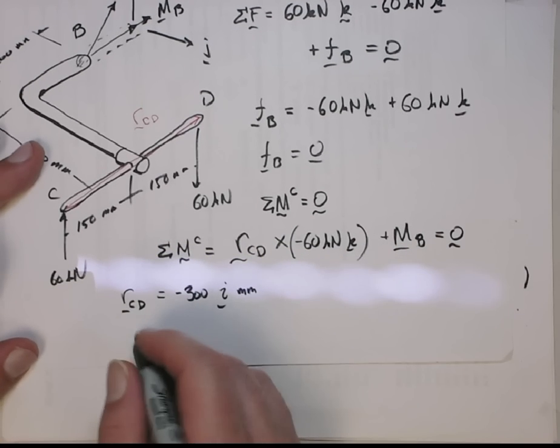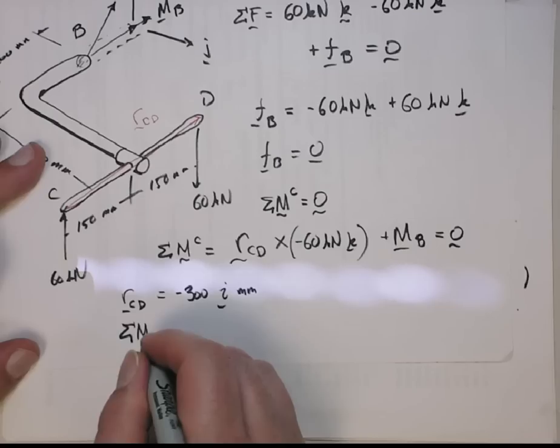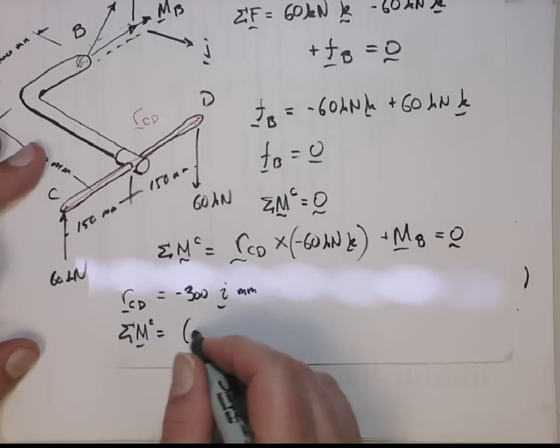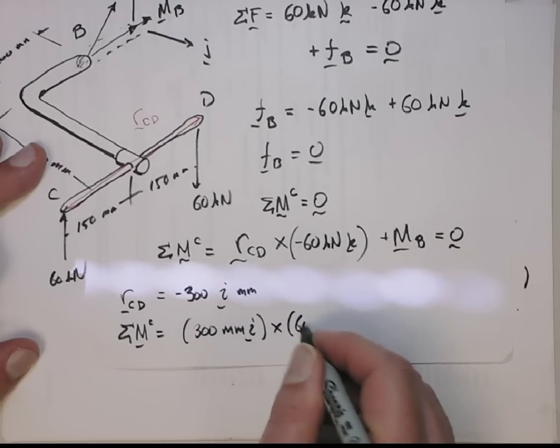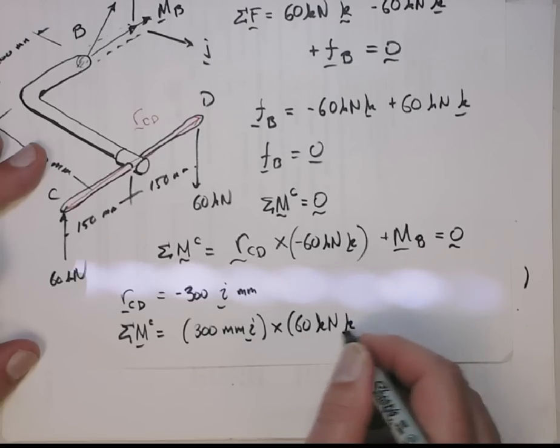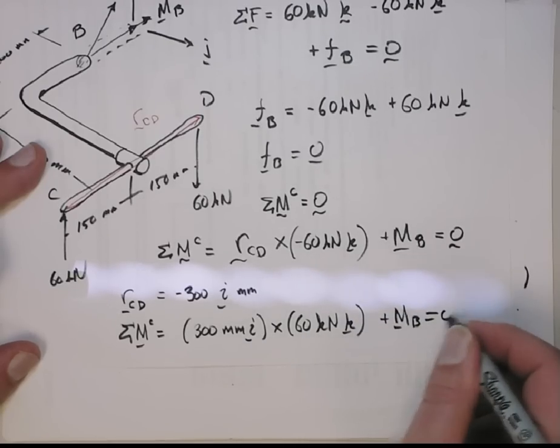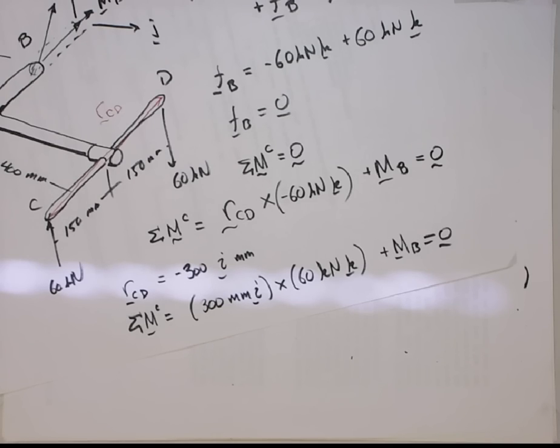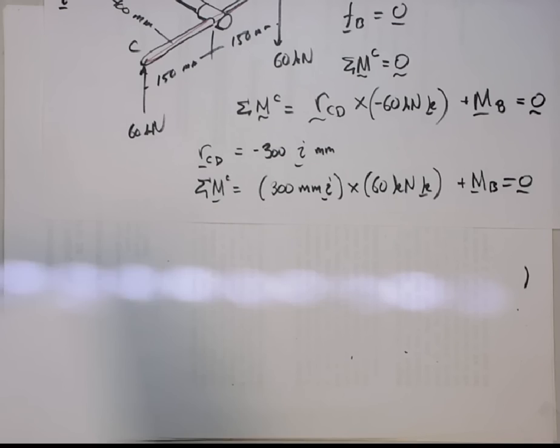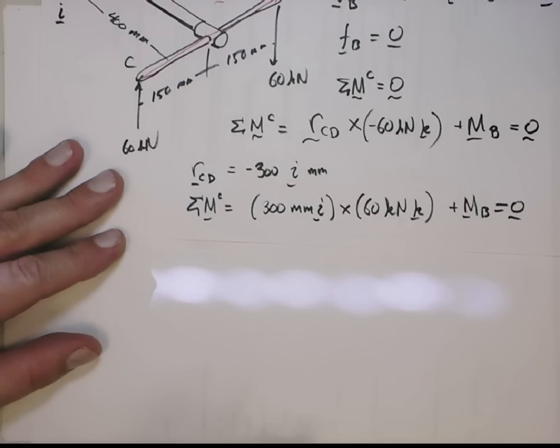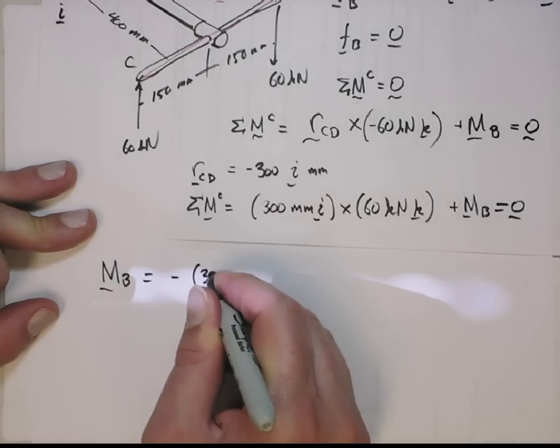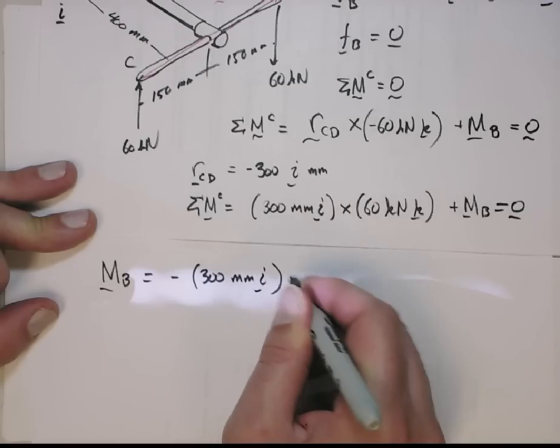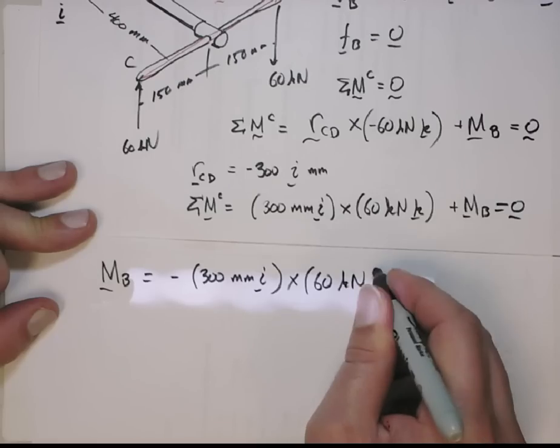Alright. So now we get sum of moments around point C is the minus and the minus becomes a positive. So I'll do 300 millimeters in the i direction cross 60 kilonewtons in the k direction plus MB equals 0. Now I get another piece of paper. We're almost done. Just put that up there. Alright. So now we get that MB is just minus 300 millimeters in the i direction cross 60 kilonewtons in the k direction.